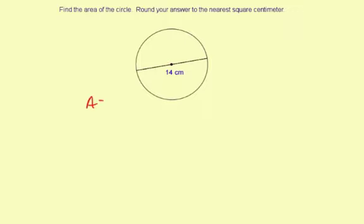So the area of a circle is pi r squared. And we don't know the radius r, but we know the diameter d is 14 centimeters.